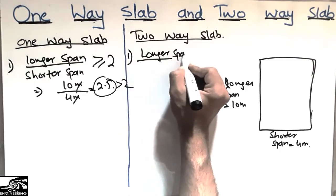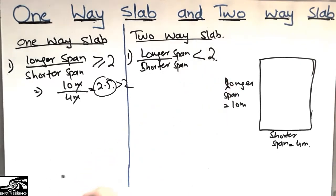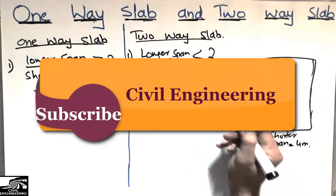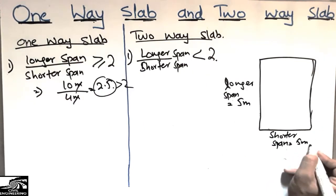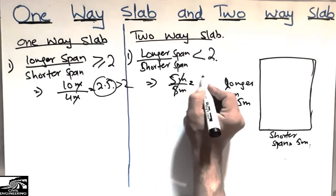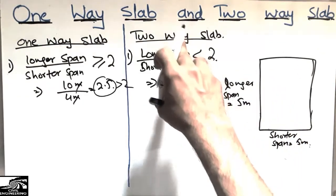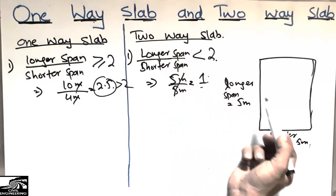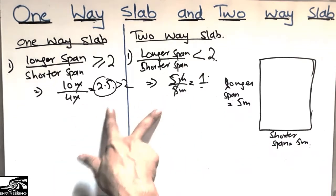In the case of the two-way slab, the ratio of the longer span to the shorter span should always be less than 2. For example, if the longer span is 5 meters and the shorter span is also 5 meters, dividing 5 by 5 gives 1, which is less than 2. So this slab is categorized as a two-way slab.